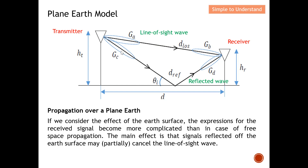For free space path loss, we only have the line-of-sight wave — meaning the signal travels in one straight line with no obstacle between the transmitter and receiver. But for the plane earth model it is slightly different: we also have a ground-reflected wave. Once we have this reflected wave it becomes more complicated, because that reflected wave can be out of phase with the line-of-sight wave and can partially or totally cancel it, which is undesirable.